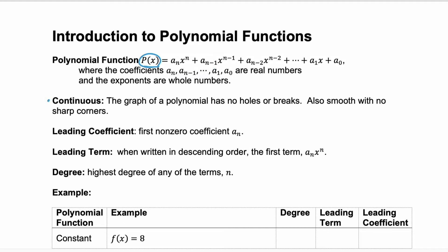Polynomial functions are continuous, which means when you're drawing the graph, you don't have to lift up your pencil, so there's no breaks or holes, and there's also no sharp corners, so it's smooth.